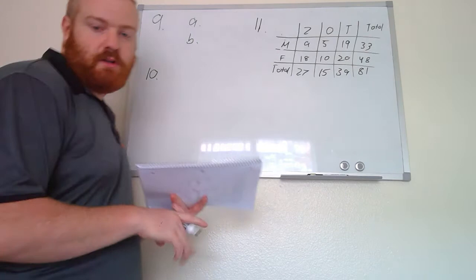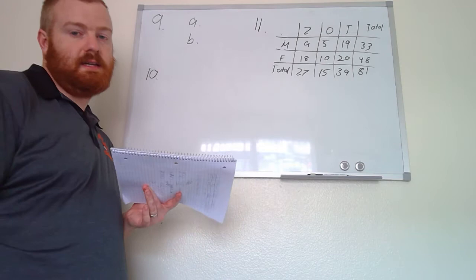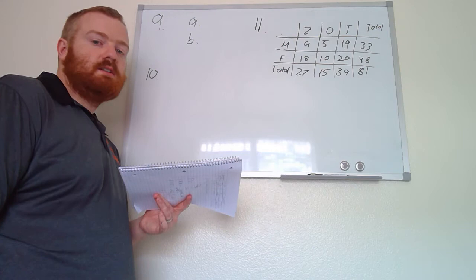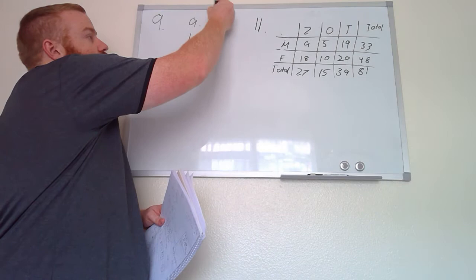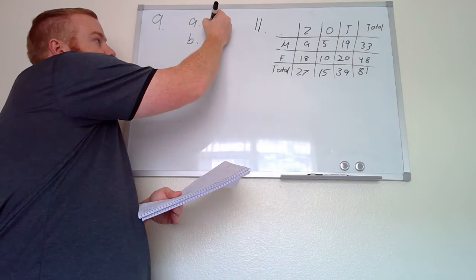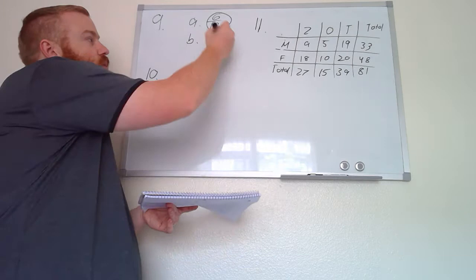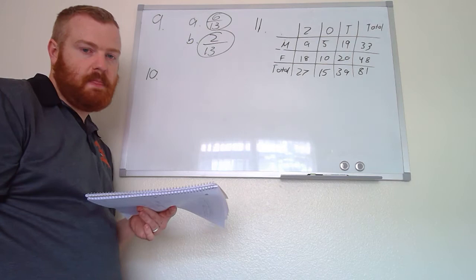For question number nine, a ball is drawn randomly from a jar that contains six red, two white, and five yellow balls. Find the probability of each given event. For event A, a red ball is drawn: take the number of red divided by the total. There are six red balls and a grand total of thirteen, so the answer is six over thirteen. For a white ball, there are two white out of thirteen.